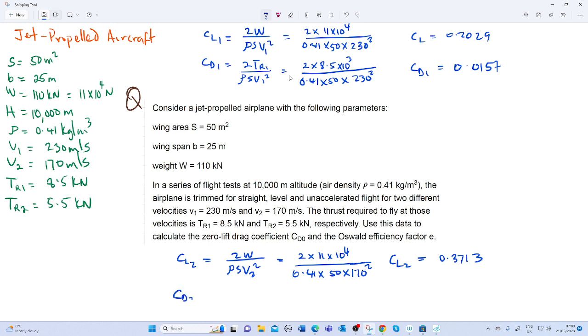Let us find our CD2 which equals 2TR2 over ρSV2². Our CD2 equals 2 times 5.5 times 10³ over 0.41 times 50 times 170 squared. Our CD2 equals 0.0186.